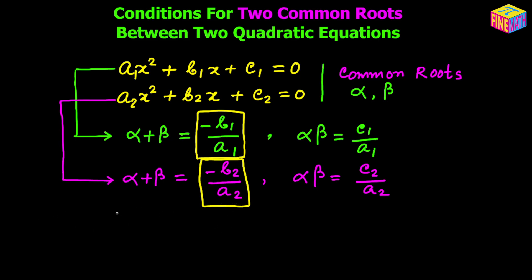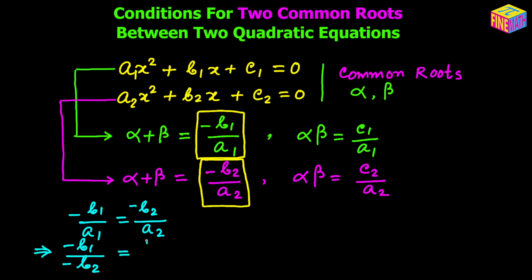Since they have to be equal, we can write: −b₁/a₁ = −b₂/a₂. Bringing a₁ to the right-hand side and b₂ to the left-hand side gives −b₁/b₂ = a₁/a₂. The negatives cancel each other, so we get a₁/a₂ = b₁/b₂. That is one necessary condition found so far.